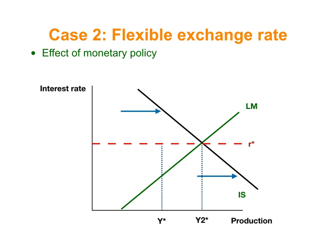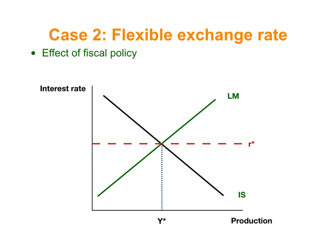As a consequence of the depreciation, local products are going to be cheaper in the short term, and that means that net exports are going to increase — the IS curve shifts to the right. The effect is that monetary policy is going to have an effect: there is going to be an increase in production from Y-star to Y-two-star until we reach the new equilibrium.